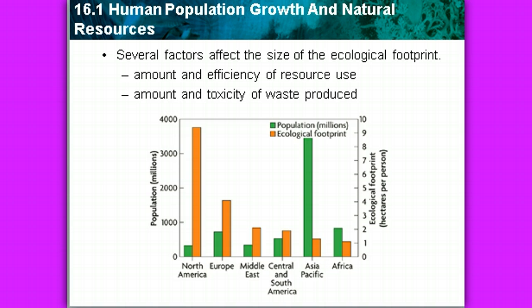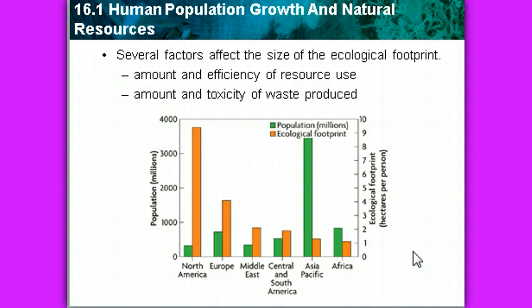Looking at the graph, we see population in millions and the ecological footprint. Population is on the y-axis in green bars; the ecological footprint is on the right-hand axis in orange. Which country creates the greatest ecological footprint for the amount of people it has? If you decided North America, you're correct. Which one leaves the smallest footprint based on its population size? Asia and the Pacific Islands. What does that tell you about what we do in North America, and what do you think needs to change?